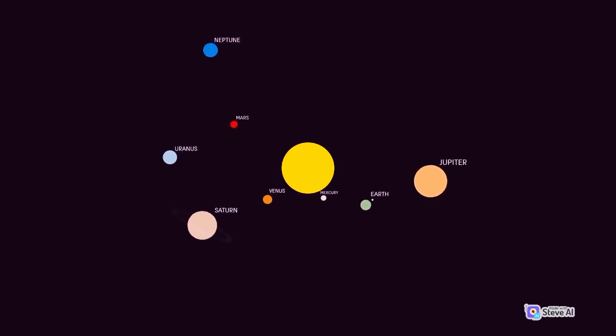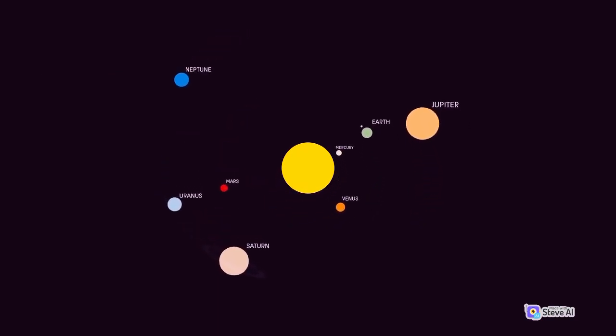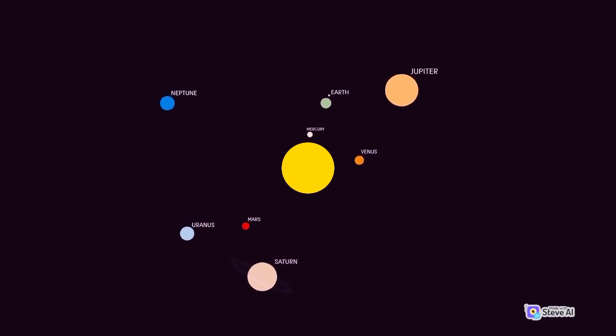Saturn is located at an average distance of about 1.4 billion kilometers, 886 million miles, from the Sun.